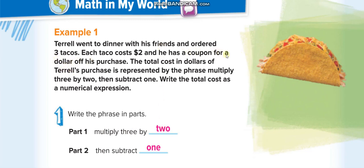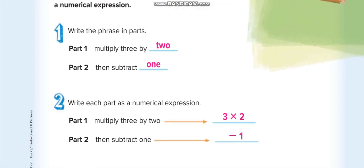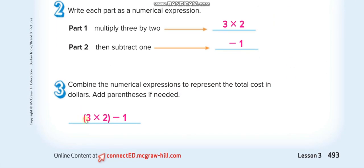For a dollar off means for one dollar off, then subtract one, minus one. So how we write our numerical expression? Three times two, because three tacos and each one cost two dollars. So three times two, three will cost six dollars. And then he have a coupon of minus one. So this is the way of writing, three times two minus one. This is our numerical expression.